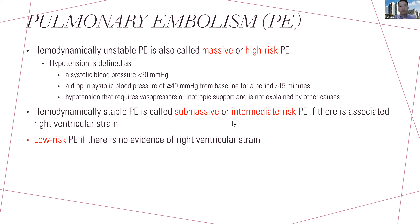I prefer a classification based on clinical impact. In massive or high-risk PE, the patient is hemodynamically unstable — systolic blood pressure below 90, or a drop of more than 40 mmHg from baseline for more than 15 minutes, requiring vasoactive agents, not caused by any other cause apart from pulmonary embolism. For submassive intermediate-risk PE, you may identify right ventricular strain without affecting vitals. For low-risk PE, there is no right ventricular strain and the patient's vitals are stable.